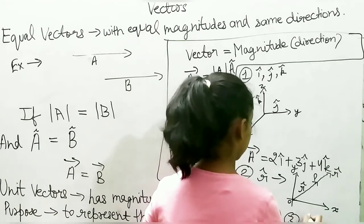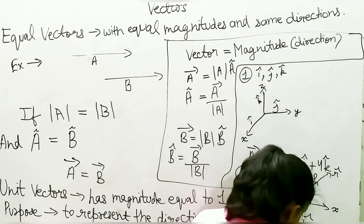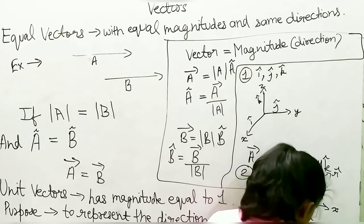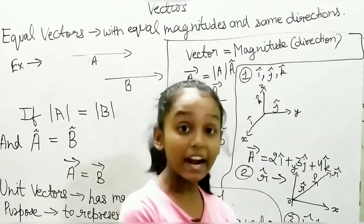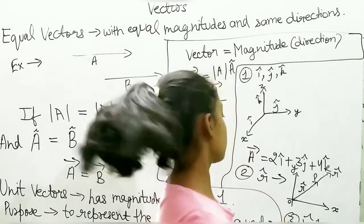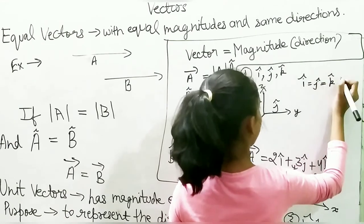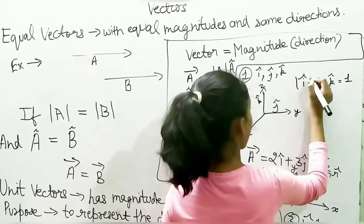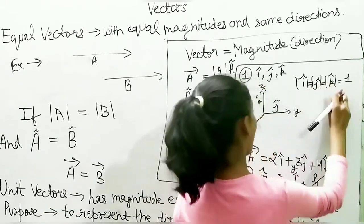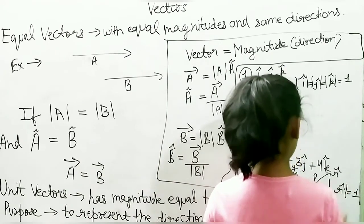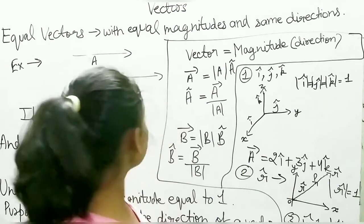The third type is n-cap, which is used to represent the direction of a flat surface normal to a plane. Since i-cap, j-cap, and k-cap are all unit vectors, their magnitudes are all equal to 1. Similarly, r-cap equals 1 and n-cap equals 1. So these were the three types of unit vectors.